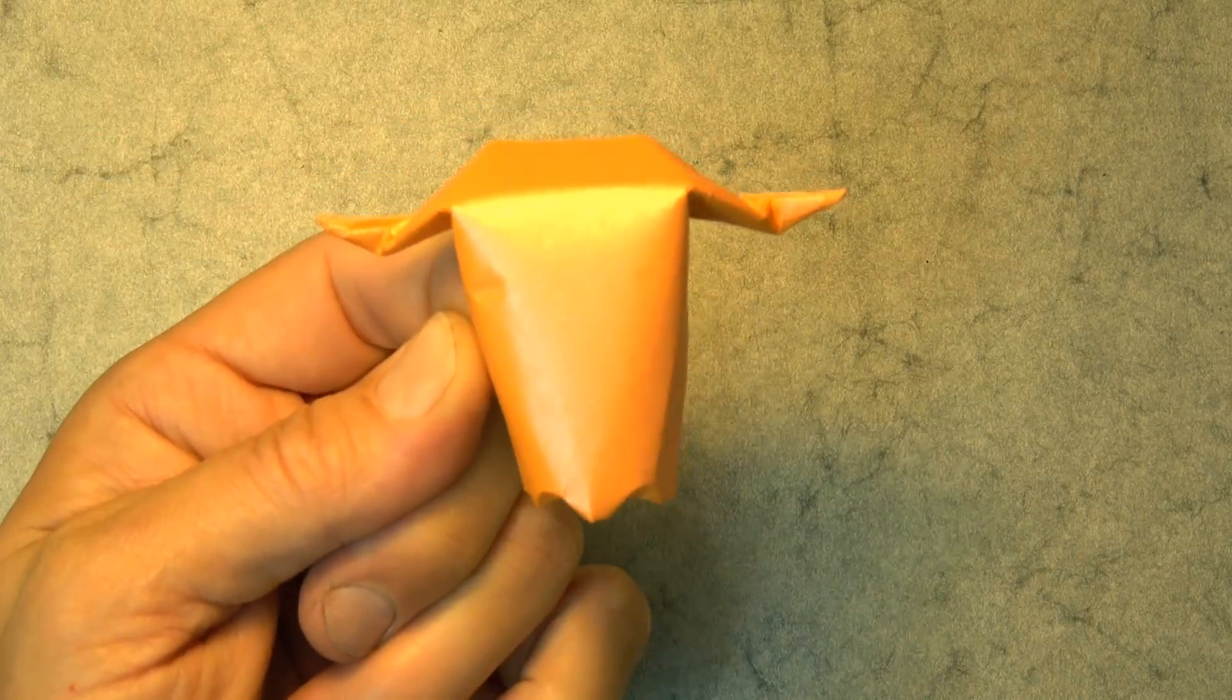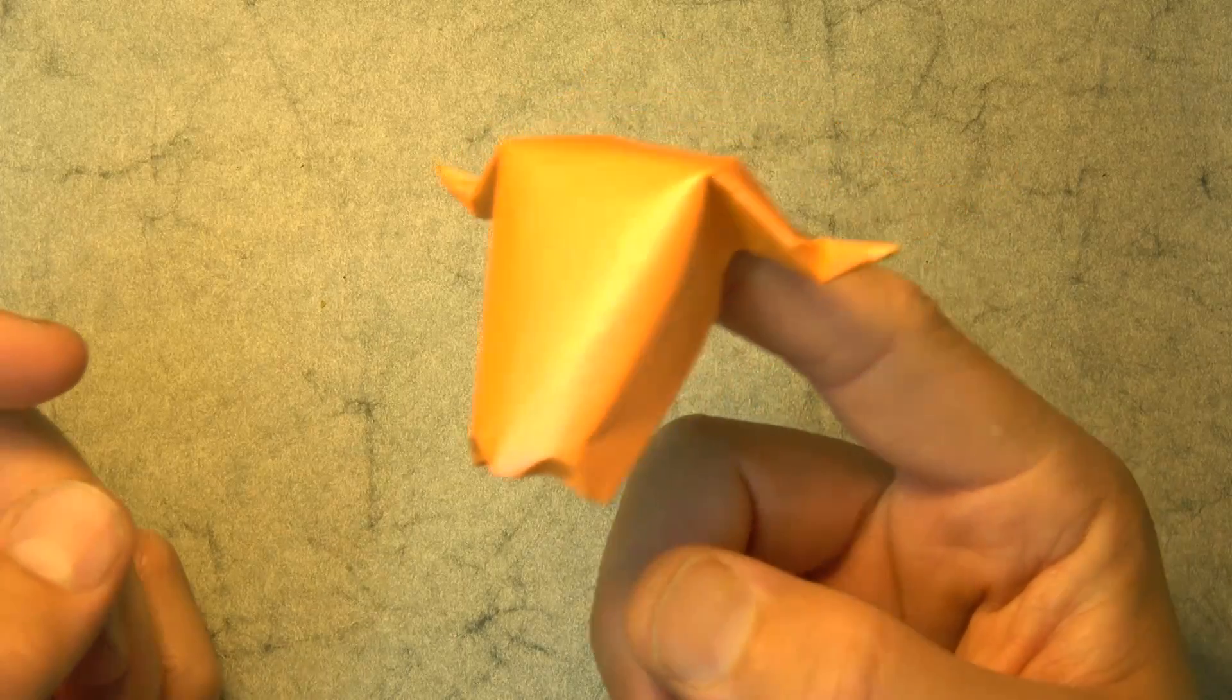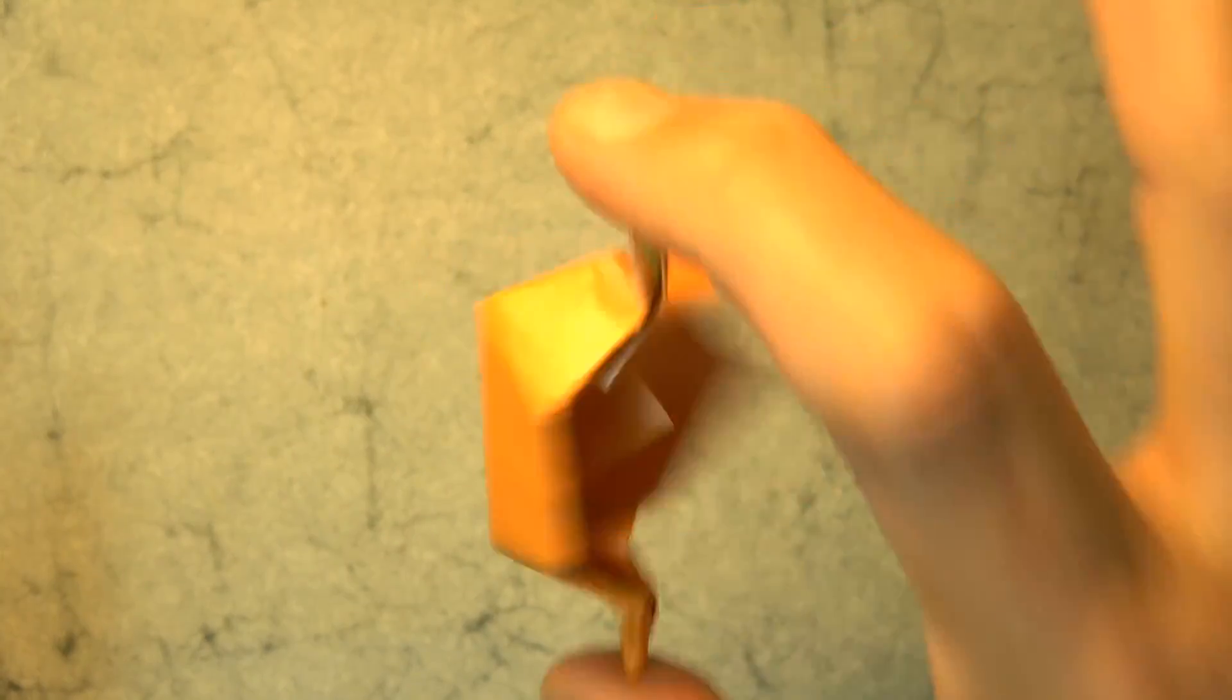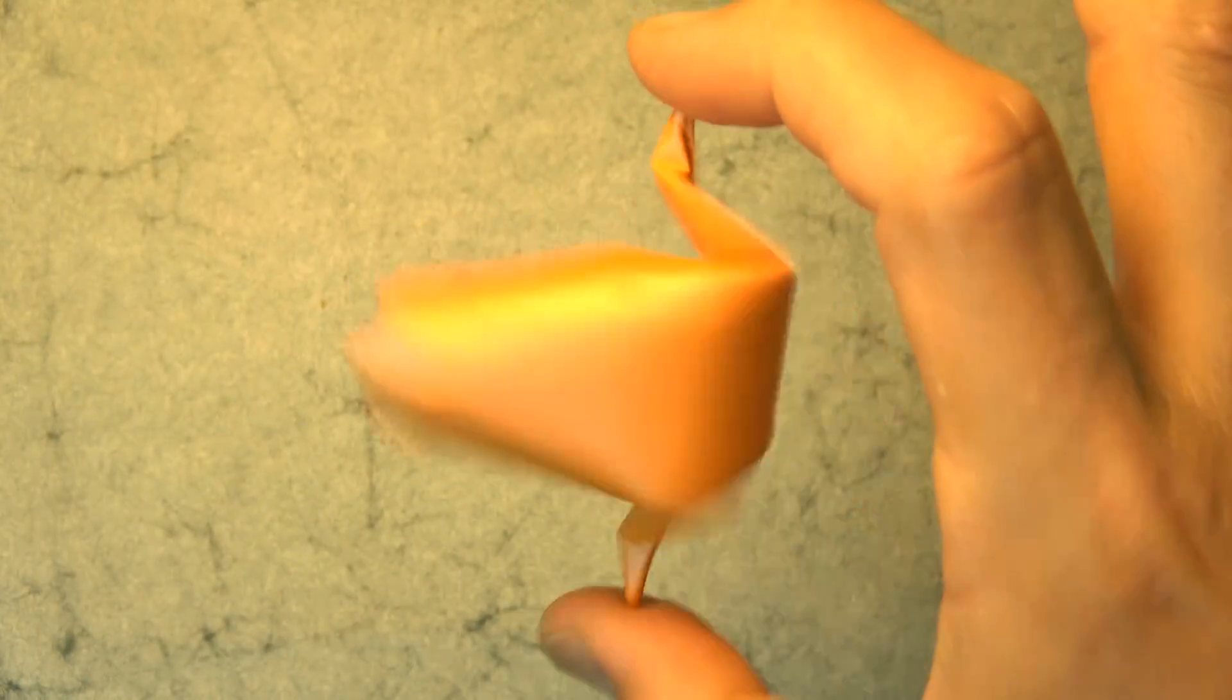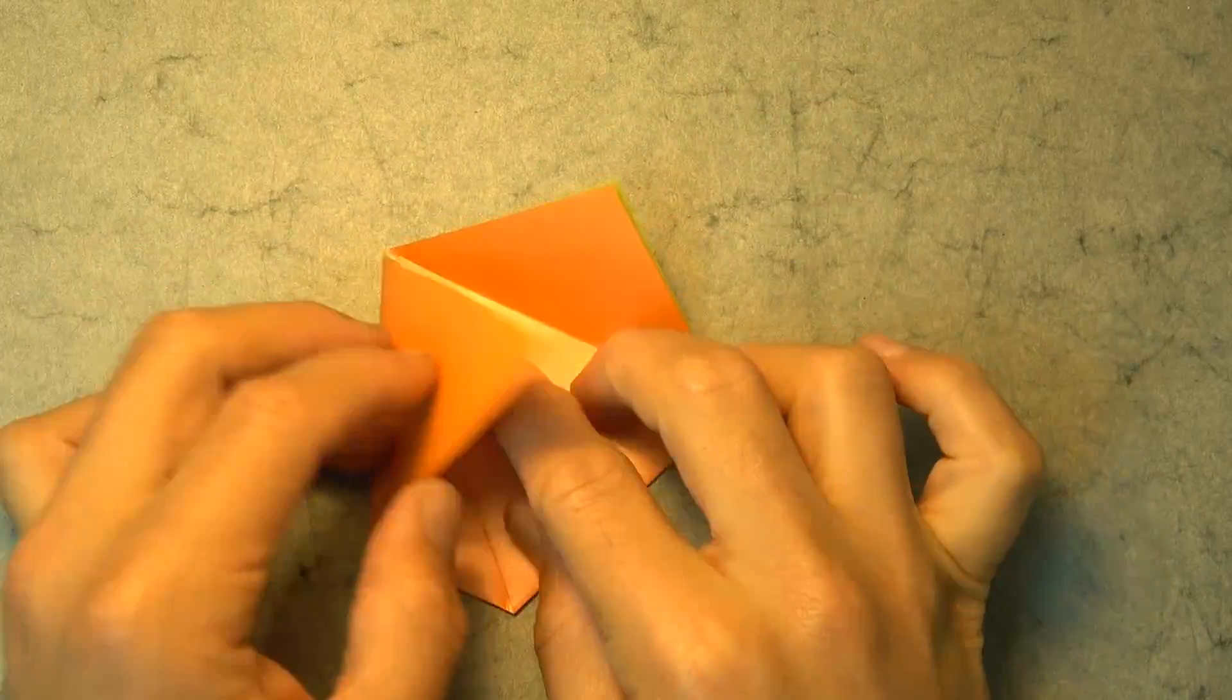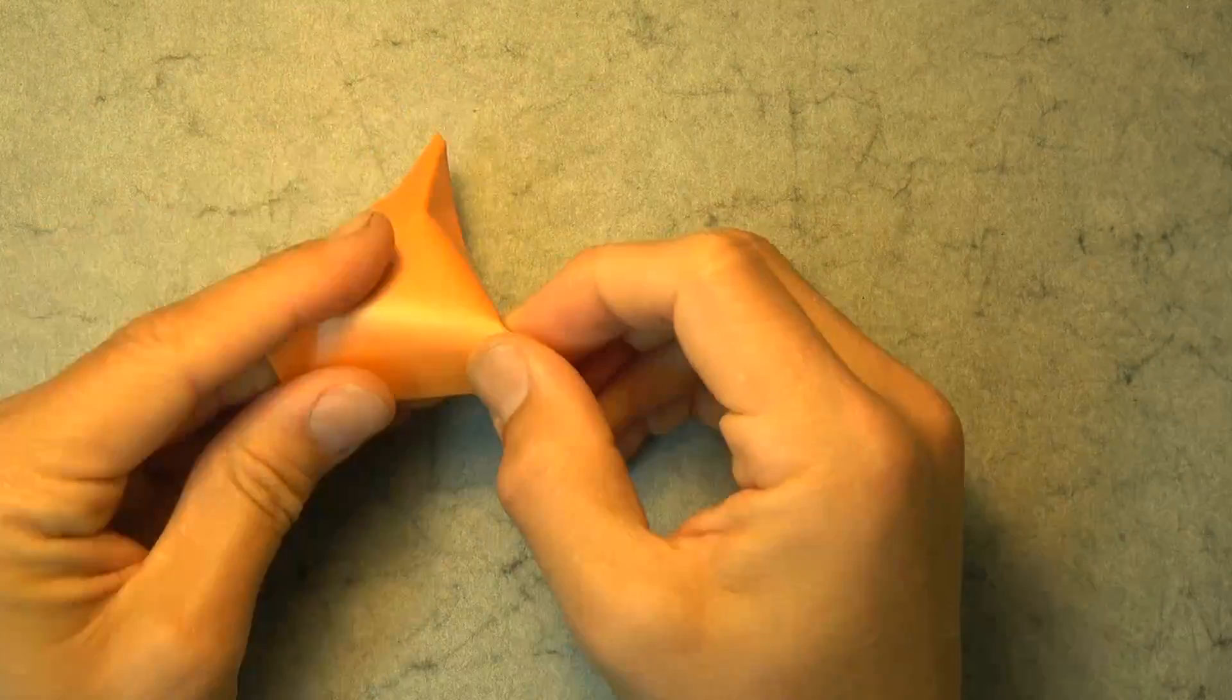But wait. Before I go, I want to show you this quick variation that I just came up with. It's a longhorn cow finger puppet and fidget spinner. And to end this video, here's a time lapse of me folding the longhorn cow. I don't think I'll do a tutorial for this. But if you guys really want me to, I might.